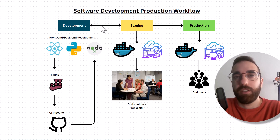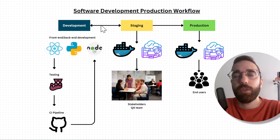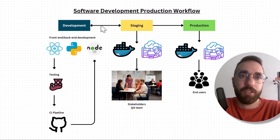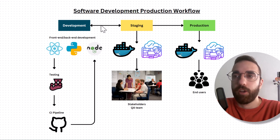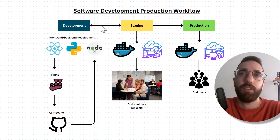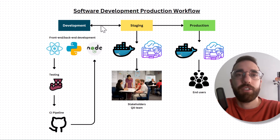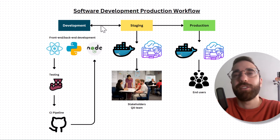When you first start learning software development, it is very easy to get lost in the details of the programming language that you are learning without having an idea of the big picture — what you are going to build and who is going to use your end product. In this video, I decided to explain the key points of the software development production workflow from the development phase to the production phase, including the technologies used in every step and why every step exists. If you are interested, keep watching.